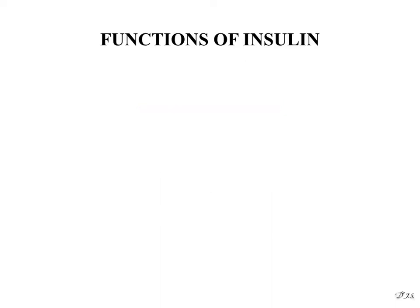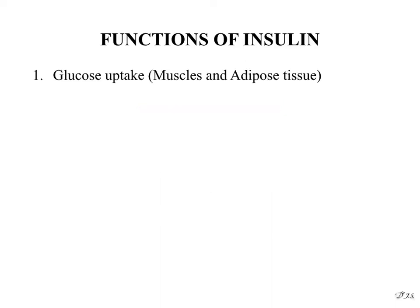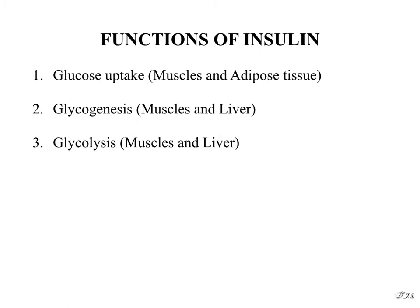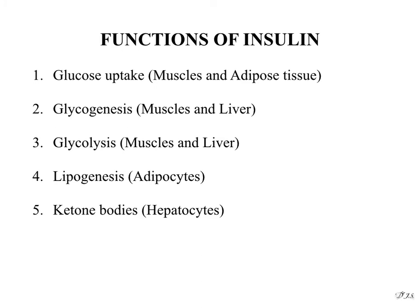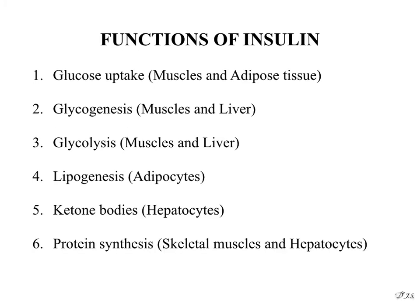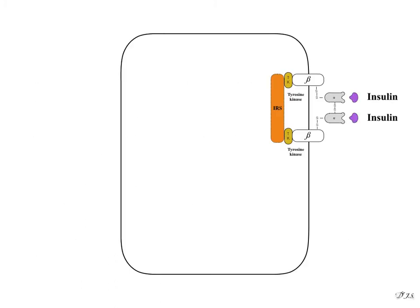Functions of insulin: increases glucose uptake in muscles and adipose tissue; increases glycogenesis in muscles and liver; increases glycolysis in muscles and liver; increases lipogenesis in adipocytes; decreases ketone body formation in hepatocytes; increases protein synthesis in skeletal muscles and hepatocytes. Insulin's major function is to lower blood glucose levels.